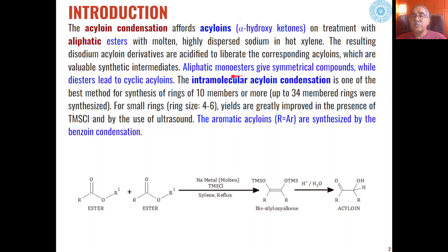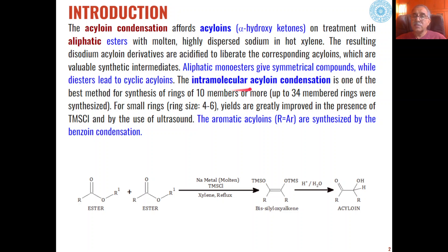Aliphatic monoesters give symmetrical acyloins as the product, while diesters lead to the formation of cyclic acyloins. The process may be intermolecular or intramolecular depending upon the substrate used. The intramolecular acyloin condensation is used mainly for the synthesis of ring compounds having 10 carbons or more, up to 34-membered rings, which can be synthesized through this process.